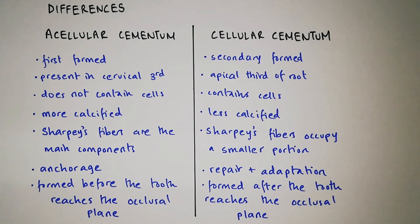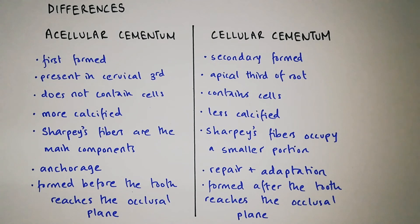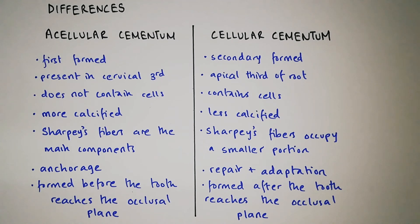Differences between acellular and cellular cementum: acellular cementum is first formed while cellular cementum is secondarily formed. Acellular cementum is present in the cervical third of the root while cellular cementum is present in the apical third. Acellular cementum does not contain cells while cellular cementum contains cementocytes. Acellular cementum is more calcified while cellular cementum is less calcified. In acellular cementum, Sharpey's fibers are the main components, while in cellular cementum Sharpey's fibers occupy a smaller proportion. Acellular cementum is involved in anchorage of the tooth while cellular cementum is involved in repair and adaptation. Acellular cementum is formed before the tooth reaches the occlusal plane while cellular cementum is formed after.